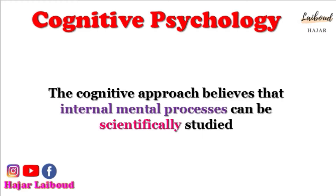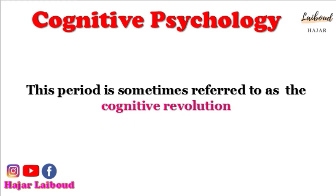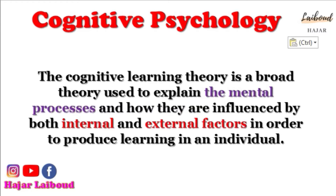For cognitivists, changes in behavior are observed but only as an indicator of what is going on in the learner's brain. This period is sometimes referred to as the cognitive revolution, with a wealth of research on topics such as information processing, language, memory, attention, perception, metacognition, and so on. We can conclude that the cognitive learning theory is a broad theory used to explain the mental processes and how they are influenced by both internal and external factors in order to produce learning in an individual.